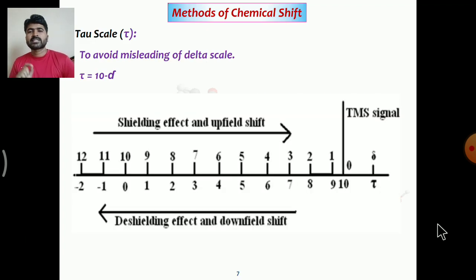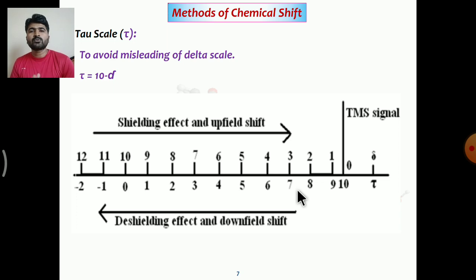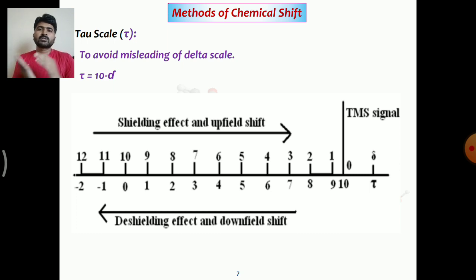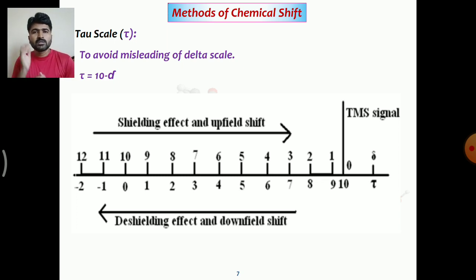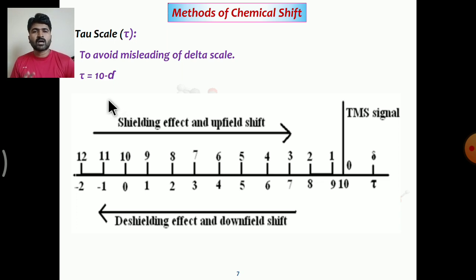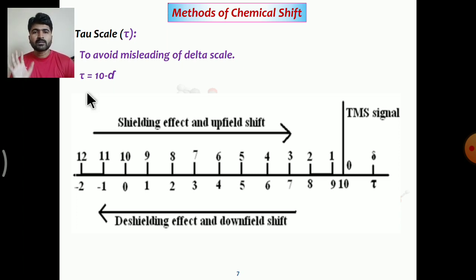The second type of scale is the tau scale, which was designed to avoid the misleading nature of the delta scale — where downfield gives a higher delta value and upfield gives a lower delta value, causing confusion. The tau scale is very simple: tau equals 10 minus delta.